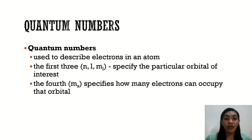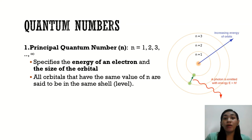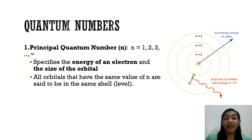The first quantum number is the principal quantum number, represented by small letter N. The principal quantum number can be any number between 1 to infinity. It specifies the energy of an electron and also the size of the orbital. All orbitals that have the same value of N are said to be in the same shell or level.